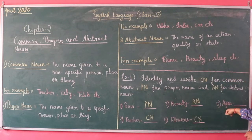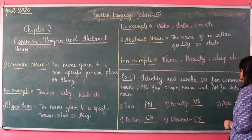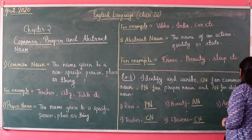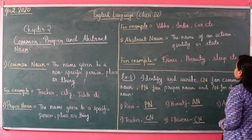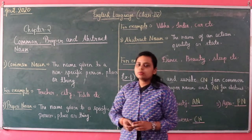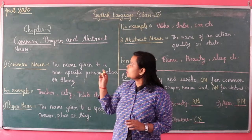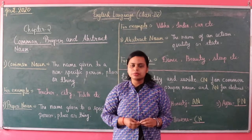And the last one is Agra. That is the name of a place, and it is a proper noun. That was all about Chapter 2, which is common, proper, and abstract noun.